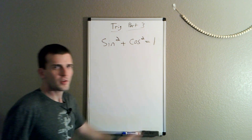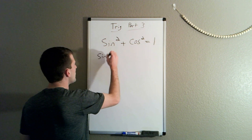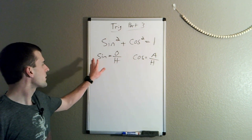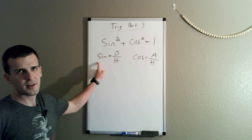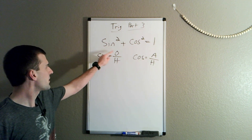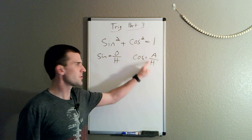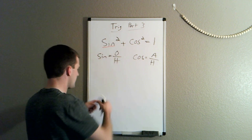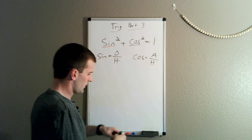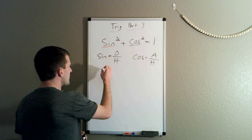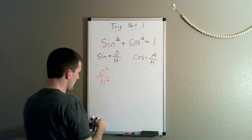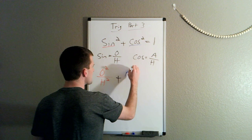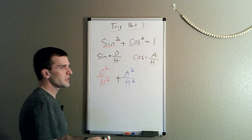So let's prove that. From our last videos we learned that sine is opposite over hypotenuse and cosine is adjacent over hypotenuse — the angles are implied. So sine of an angle equals the opposite side over the hypotenuse, and cosine of that same angle is adjacent over hypotenuse. Let's plug these into the original equation. Sine squared gives us opposite squared over hypotenuse squared, plus cosine squared gives us adjacent squared over hypotenuse squared, and this still equals one.